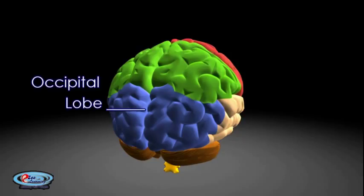The occipital lobe is the visual processing center of the mammalian brain containing most of the anatomical region of the visual cortex.